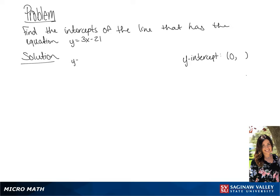we're going to plug 0 in for x. So this will give us y = 3 times 0 minus 21, giving us y = -21. So the y-intercept is (0, -21).